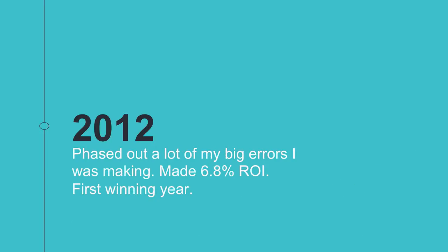2012 was when things started to work out for me. I phased out a lot of my big errors and finished the year up 6.8%. I should have made way more — probably 40-50% in 2012. Going back over the trades, the problem was that I killed winning trades too early and let losing trades run for too long. But it was still my first winning year, so I was pretty happy with that, especially at a time when you could only make 0.5% return on your savings in a bank account.